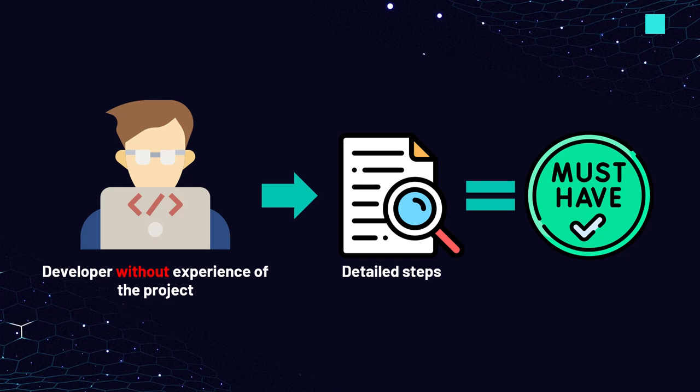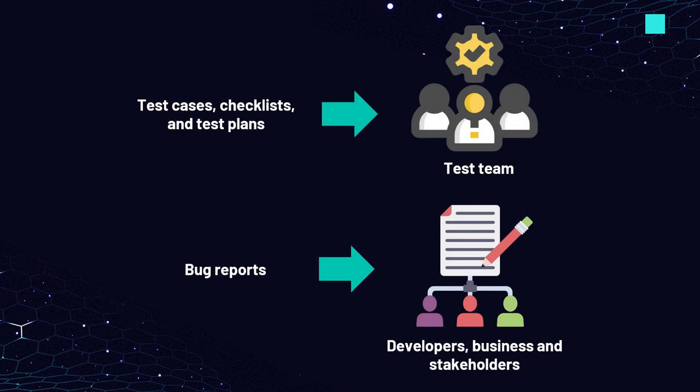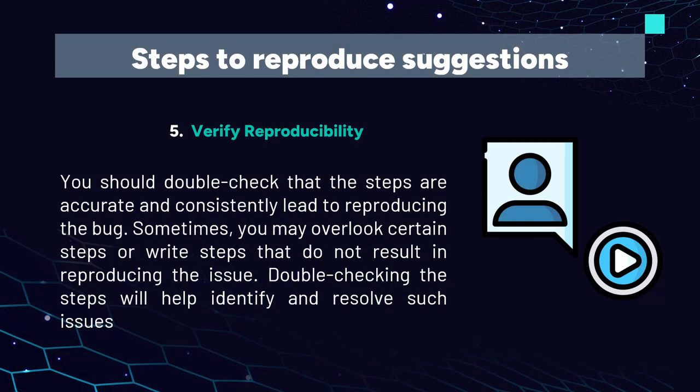A bug report is a document visible to the entire team. Test cases, checklists, and test plans are mostly used by testing teams. In contrast, bug reports are reviewed by developers, business personnel, and stakeholders — this is a representation of your work. Writing detailed steps might take a few extra minutes, but it appears significantly more professional. Suggestion 5: Verify reproducibility. Before submitting the bug report, double-check that the steps are accurate and consistently lead to reproducing the bug. Sometimes you may overlook certain steps or write steps that do not result in reproducing the issue. Double-checking will help identify and resolve such problems.